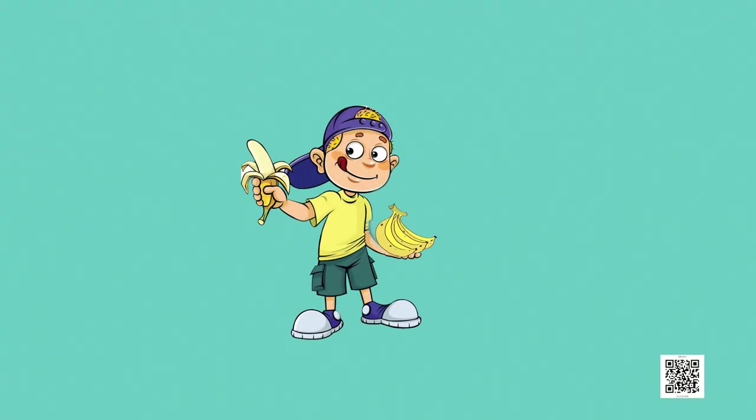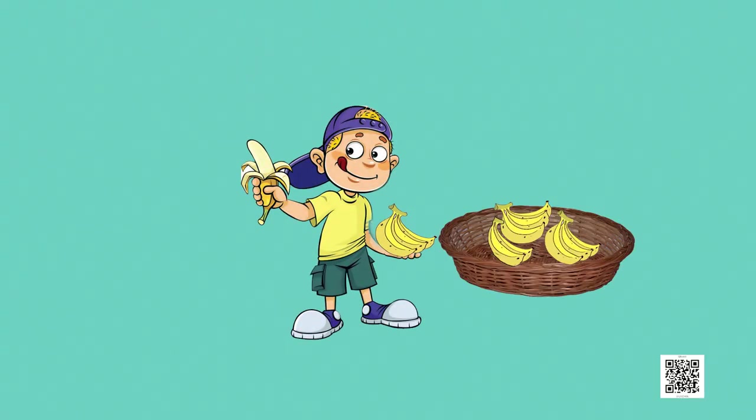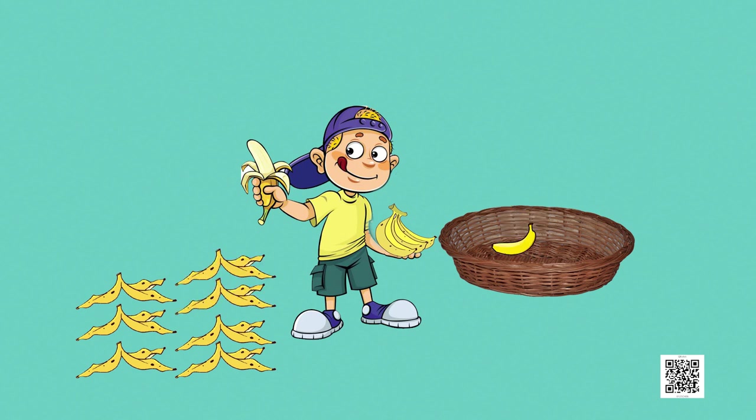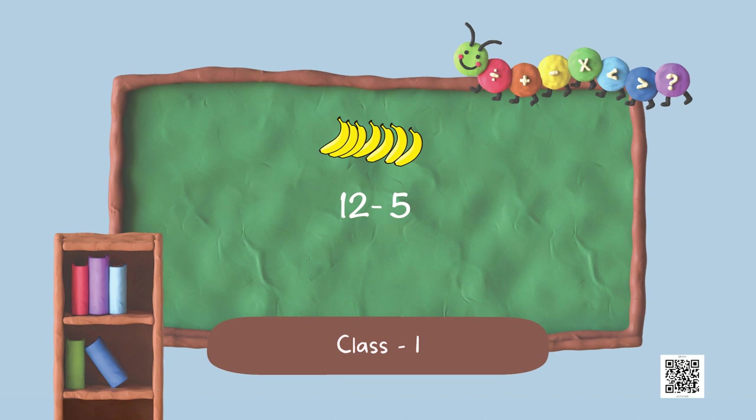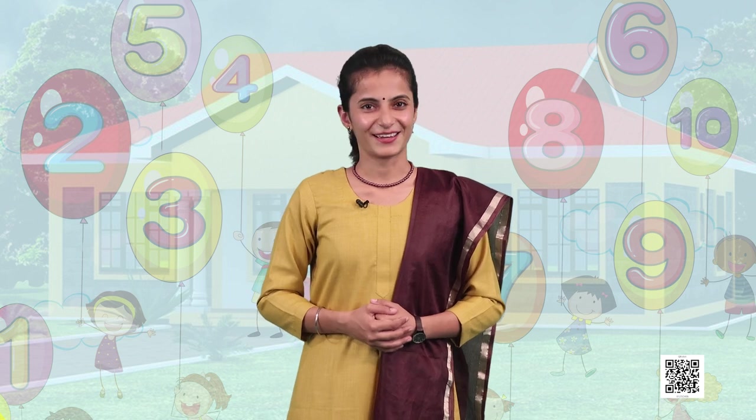One more task related to bananas — let us look at it. Raman got 12 bananas and ate a few of them. He is left with 5 bananas. How many bananas did he eat? Dear friends, can you try this task on your own? Remember, he had 12 bananas and now only 5 are left, so just subtract 5 from 12. We will meet you again in fun-filled sessions. Till then, keep learning, keep exploring, and keep playing with numbers. Take care. Namaskar.